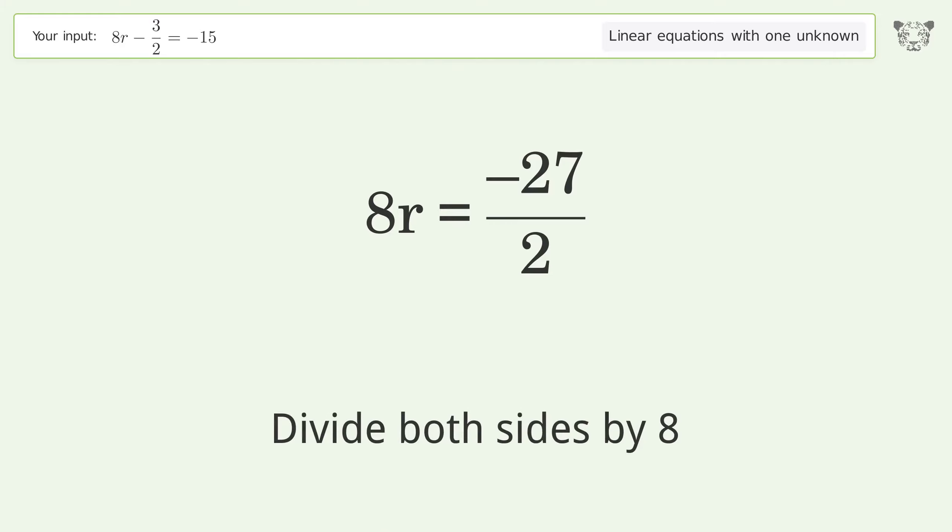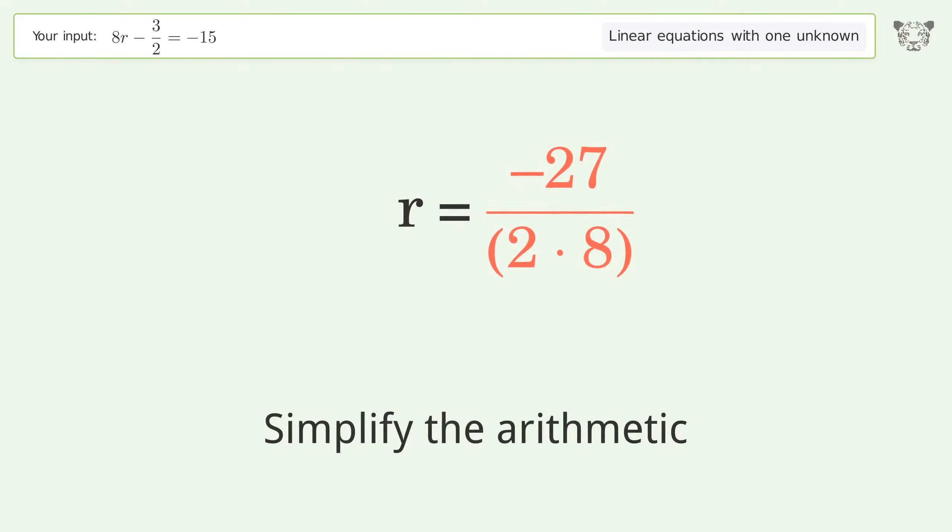Divide both sides by 8. Simplify the fraction. Simplify the arithmetic. And so the final result is r equals negative 27 over 16. Thumbs up.